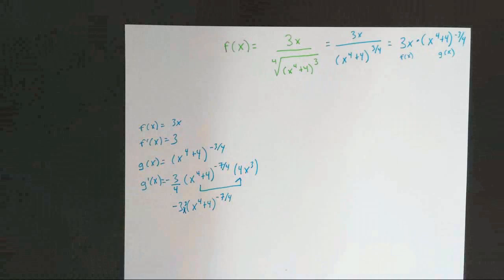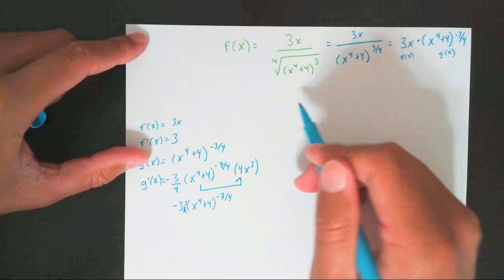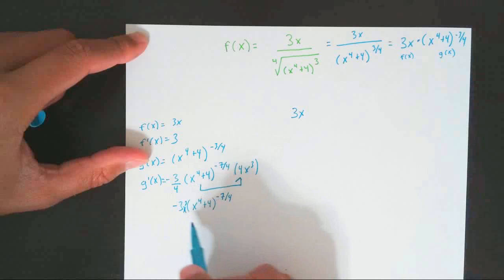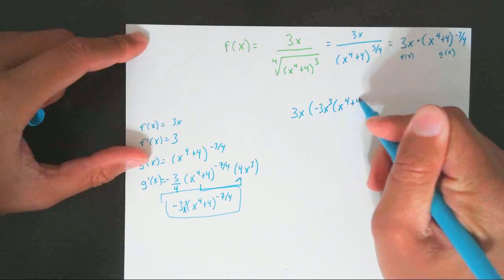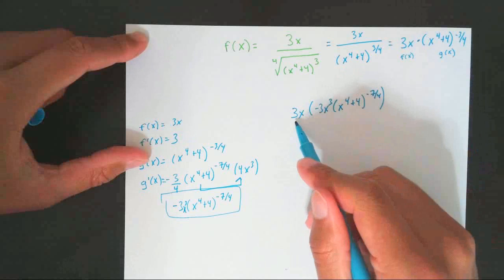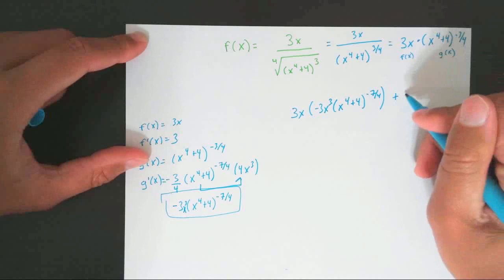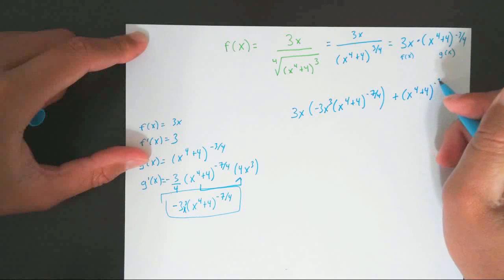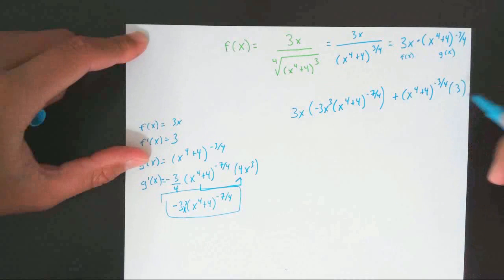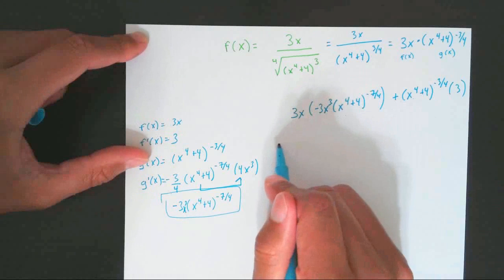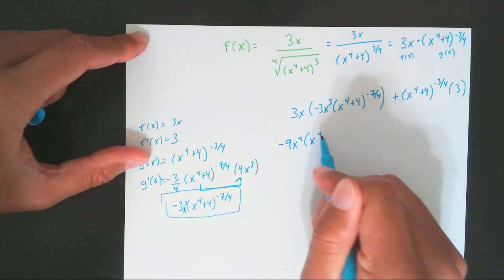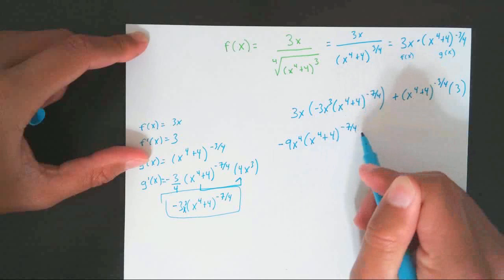Now that I have the derivatives, I can apply product rule. I bring down the first times the derivative of the second, plus bring down the second times the derivative of the first. So: first (3x) times derivative of the second — negative 3x cubed (x to the fourth plus 4) to the negative seven over four — plus the second (x to the fourth plus 4) to the negative three over four times derivative of the first (3). Multiplying these, I get negative 9x to the fourth (x to the fourth plus 4) to the negative seven over four, then bring the 3 to the front for the second term.